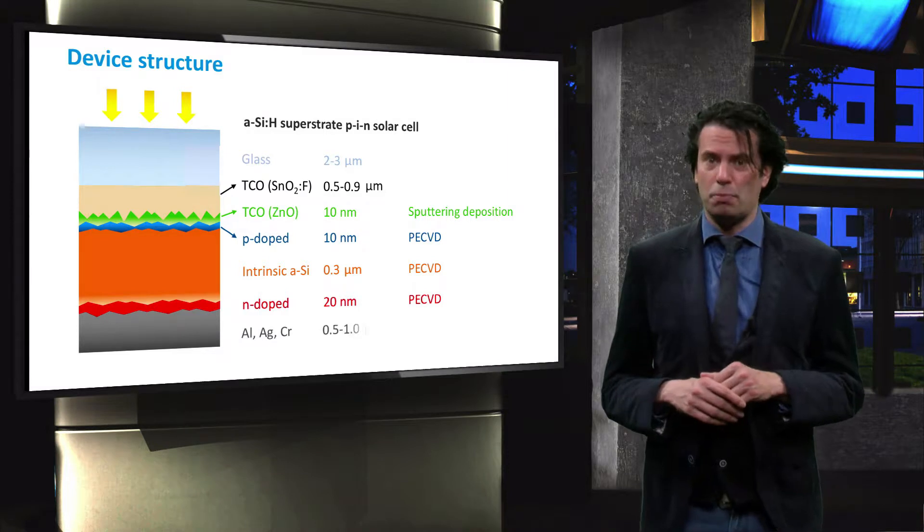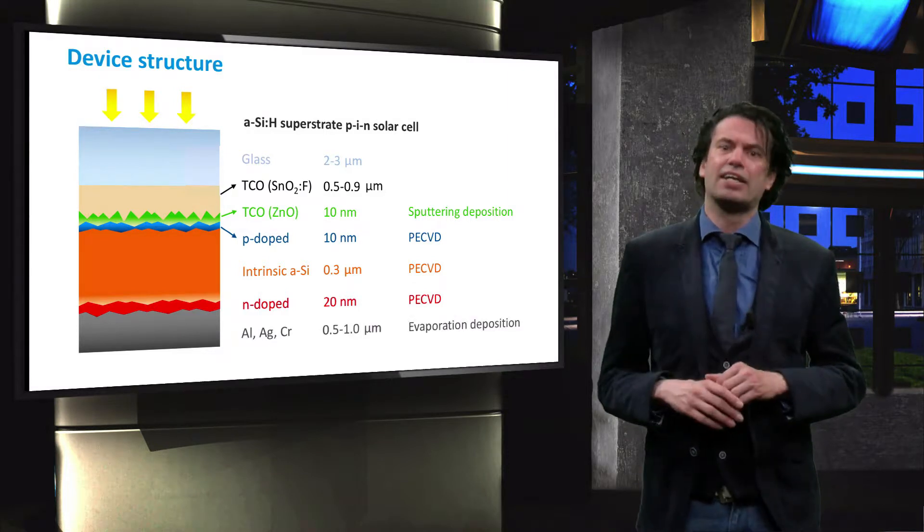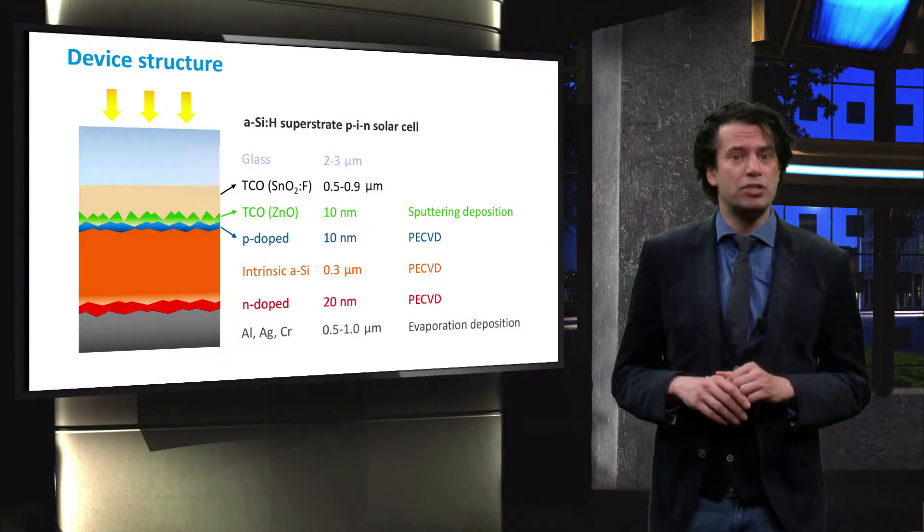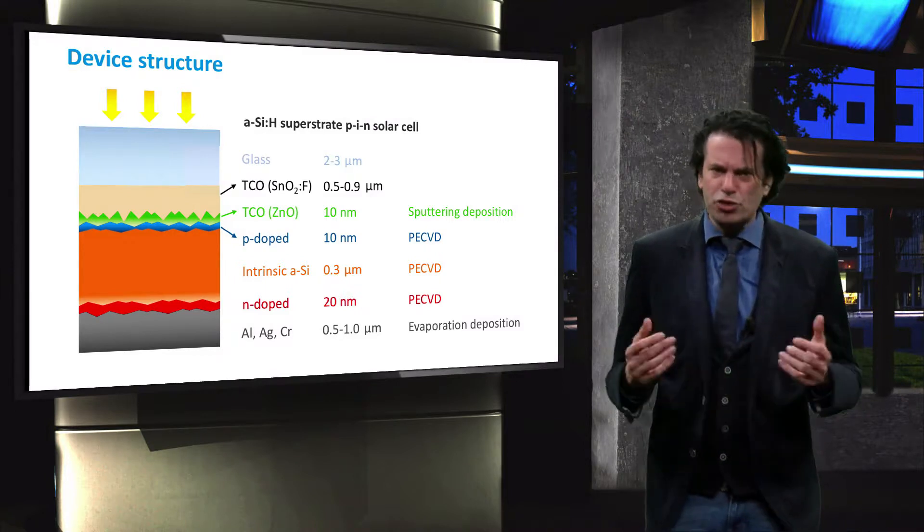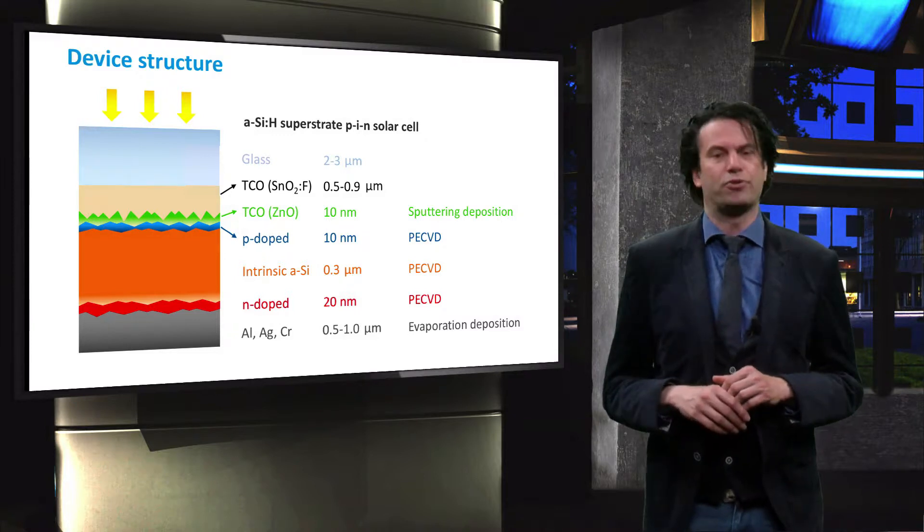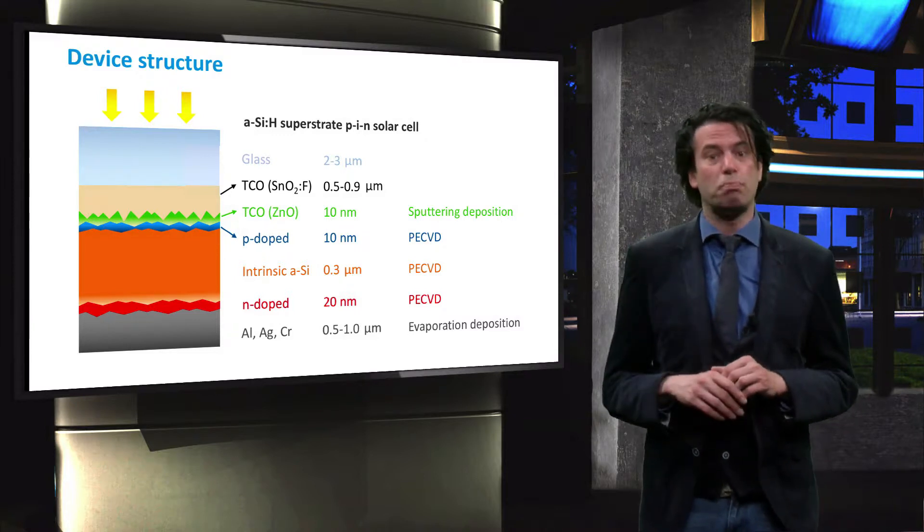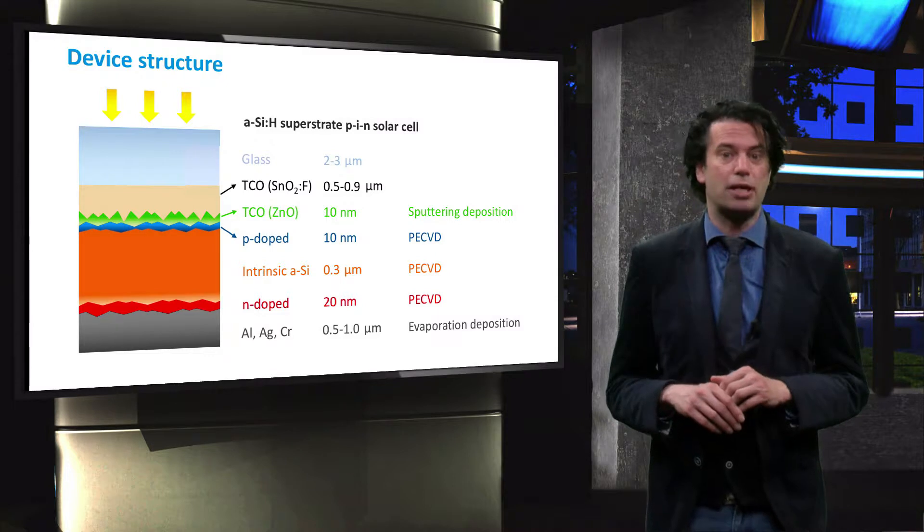Finally, the back contact is deposited. The back contact can consist of aluminum, silver or chromium, or a combination of these layers and usually has a thickness between 0.5 and 1 micron. The back contact is deposited using an evaporation deposition tool.